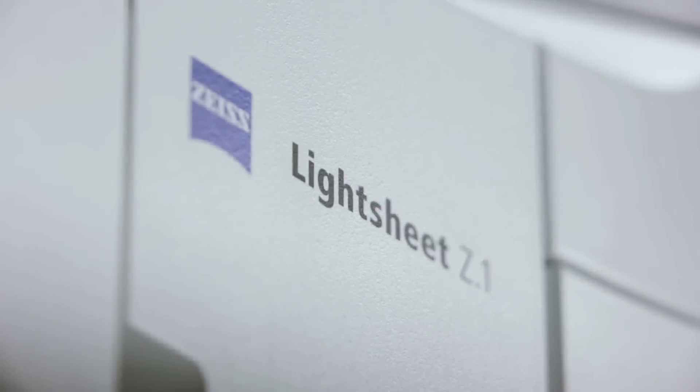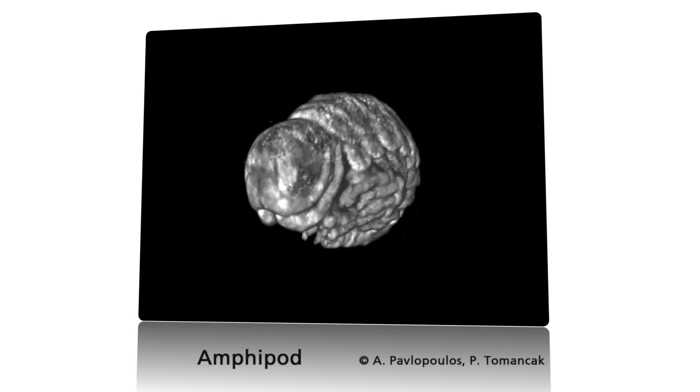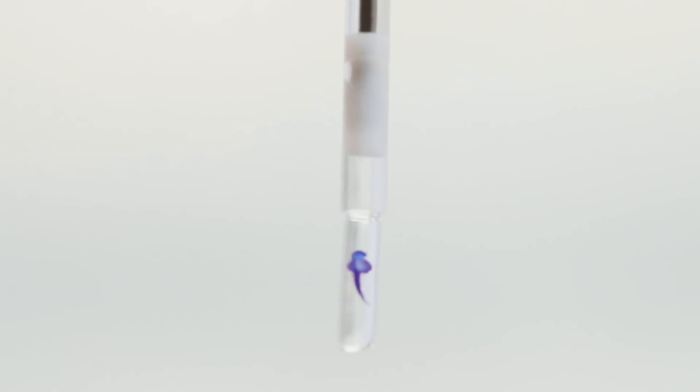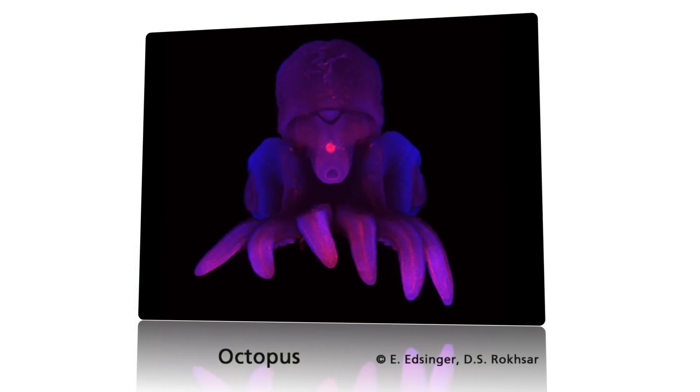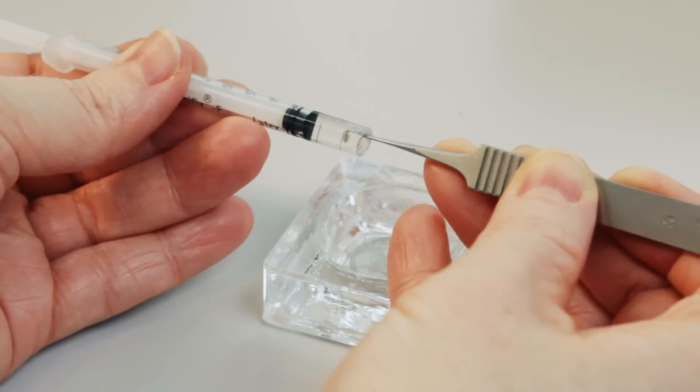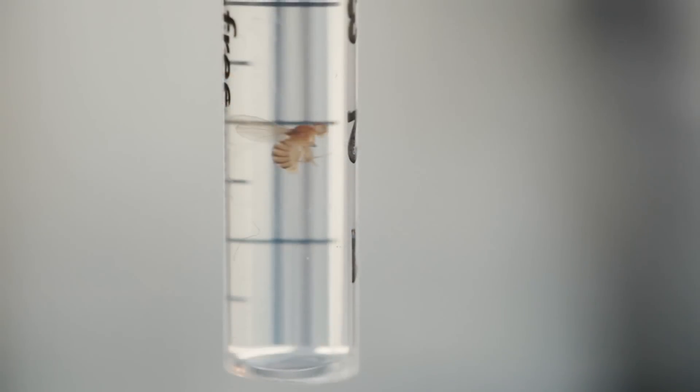One big advantage of LightSheet Z1 is that three-dimensional specimens are not confined to slides or petri dishes, but embedded in a clear gel. The developing organisms benefit from having just the right physiological conditions and next to no mechanical stress.